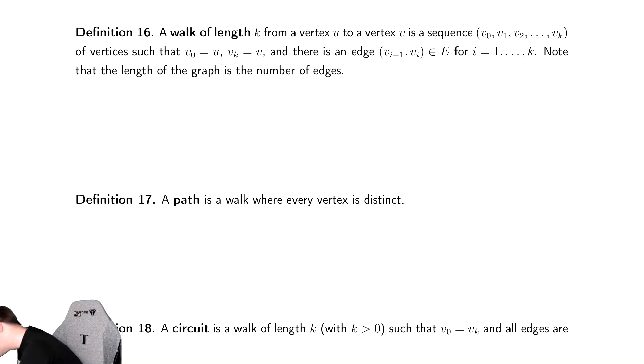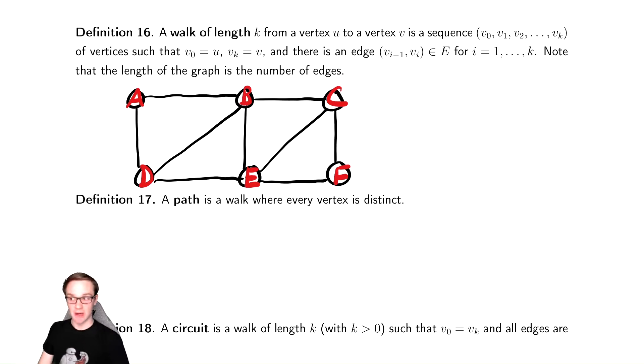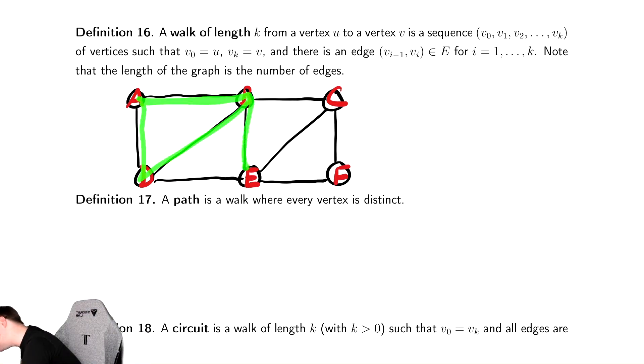So the first one we have is called a walk. A walk in a graph, I will visualize with my pointer here, and then we'll write it down. A walk is any way that you can traverse the edges of the graph. So I could go A, B, D, A, B, E, C, F, E, B. So let's try to write down an example of a walk.